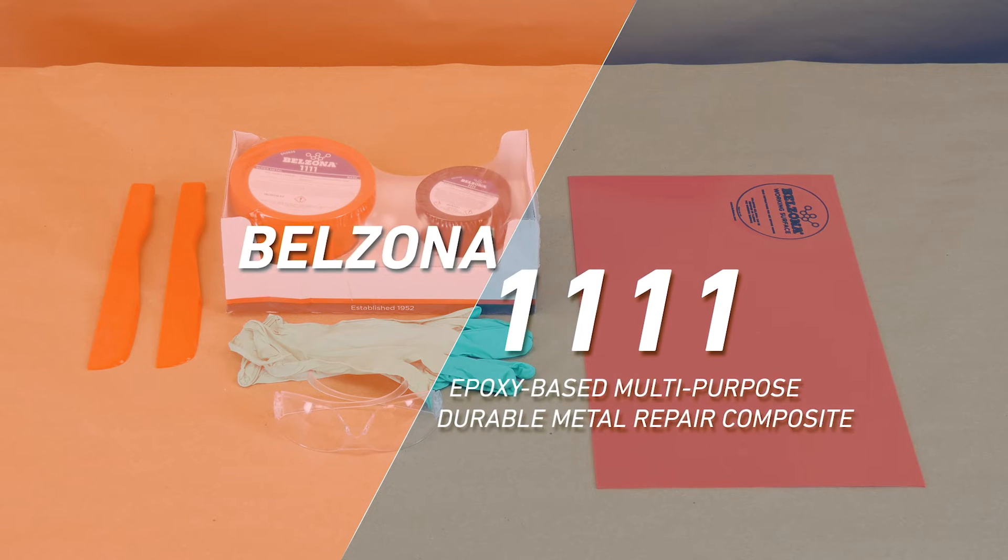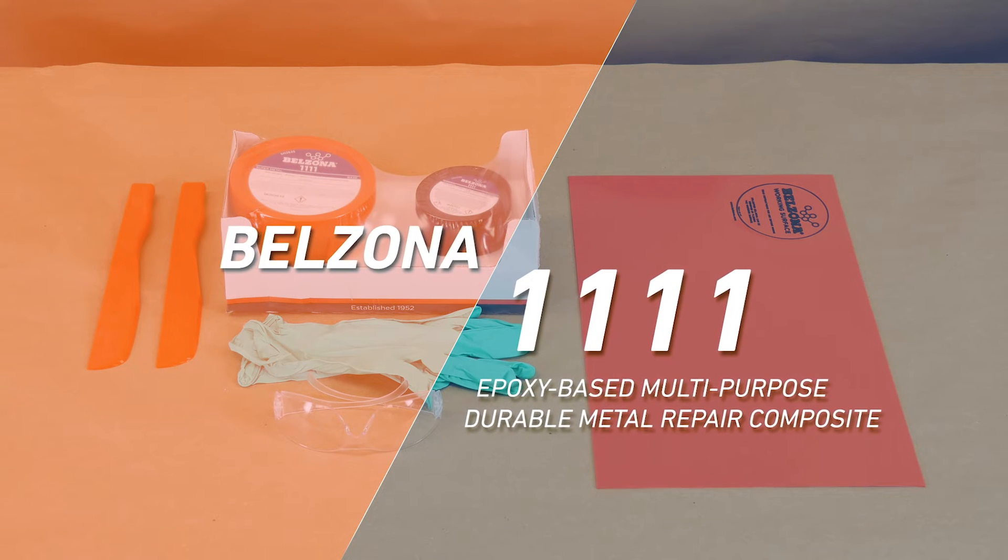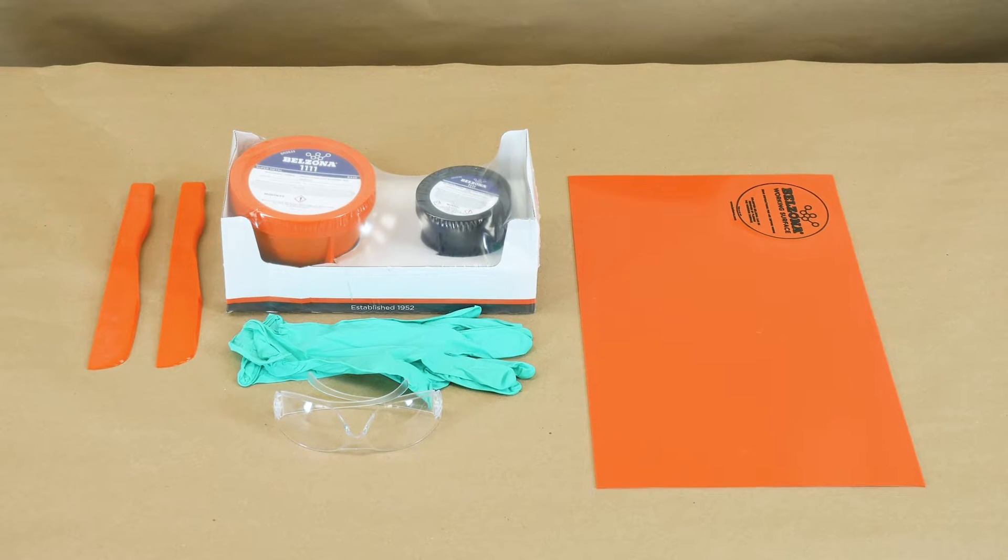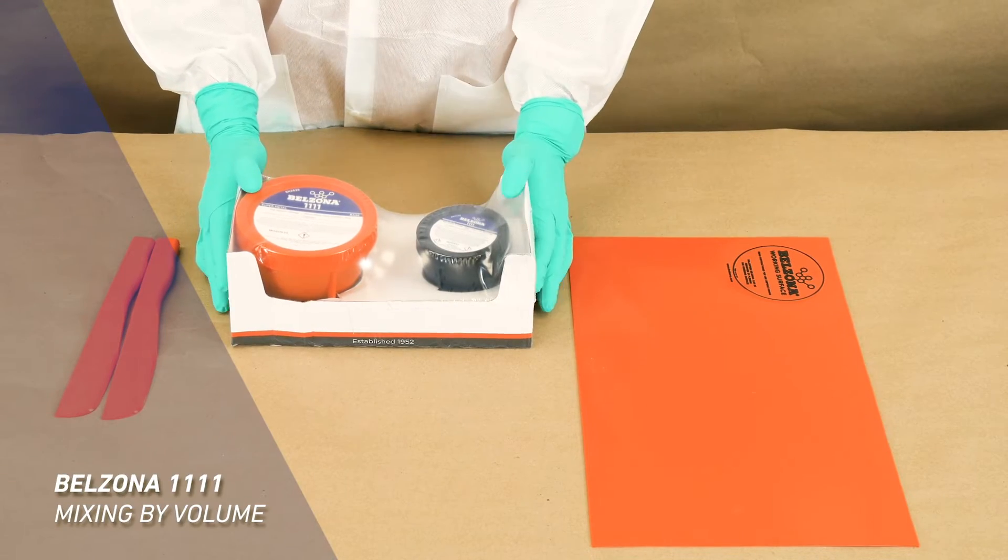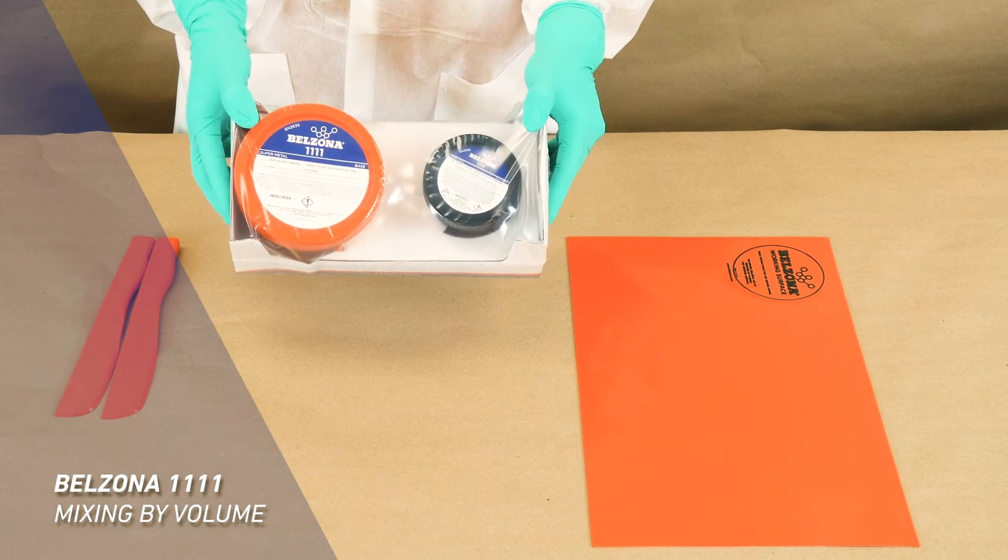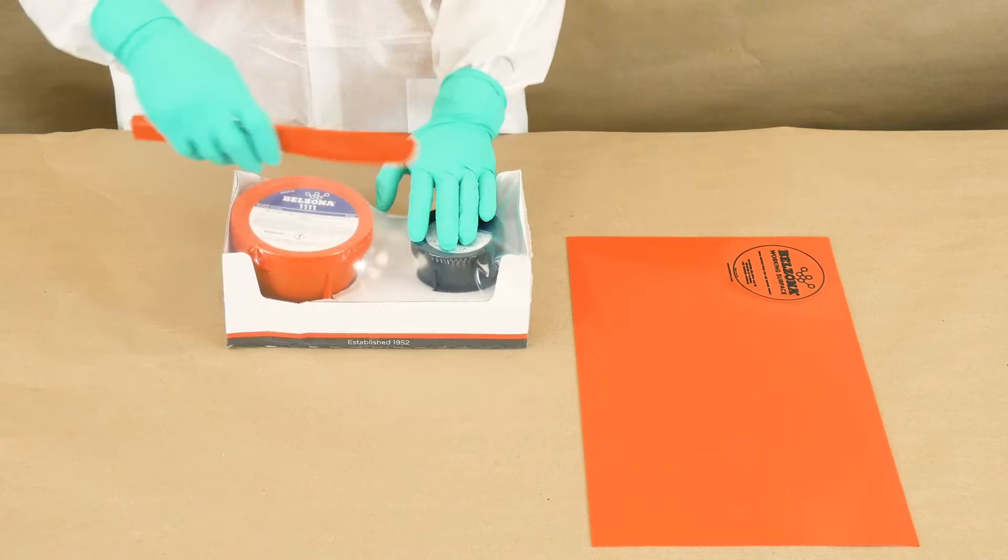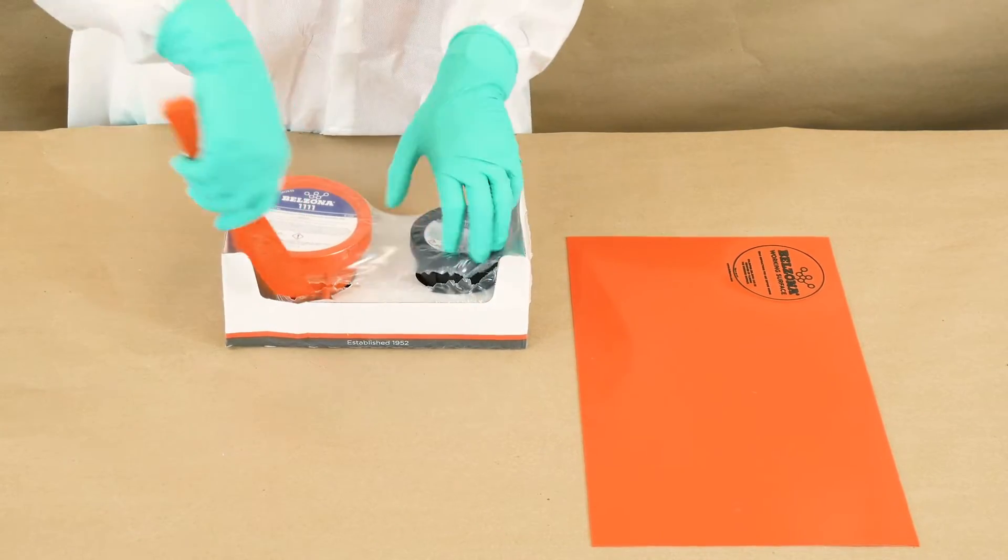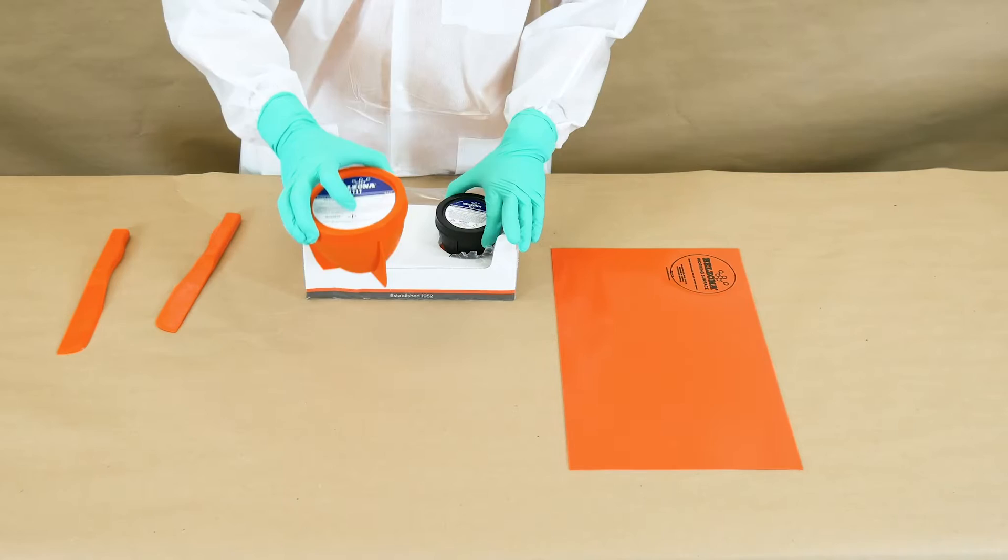Belzona 1111 is a two-component paste grade composite for repairing and rebuilding metal machinery and equipment. In this video we demonstrate how to mix Belzona 1111 by volume. One of the key factors of a Belzona application is a thorough mix of two component composites.